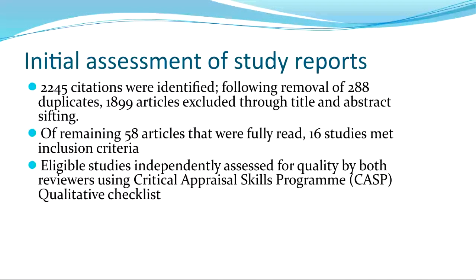The first task was to sift through this wealth of retrieved documents. Even though we were only searching for one country, we had over 2,000 potentially eligible citations. 288 of those were duplicates, so we started by removing those, and then a large proportion was excluded at the title and abstract stage. That left 58 articles that we read in full, and from those we ended up with 16 studies that met the inclusion criteria.